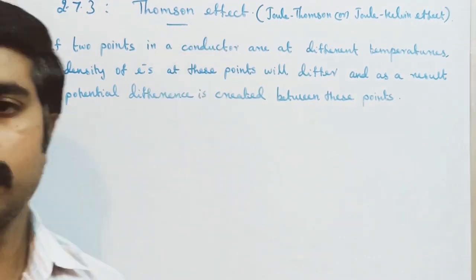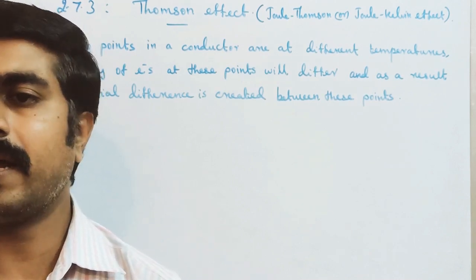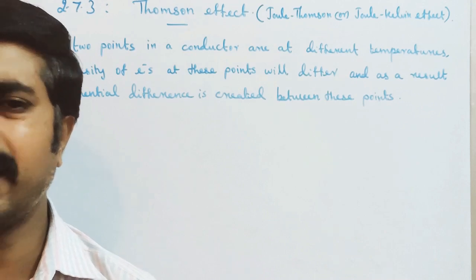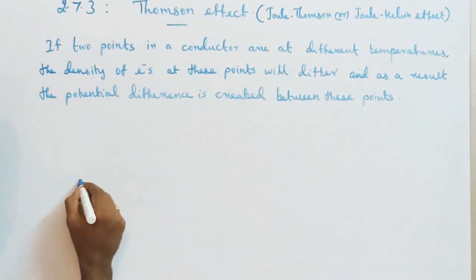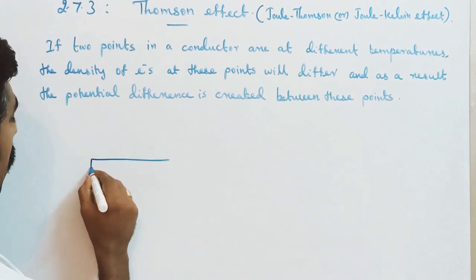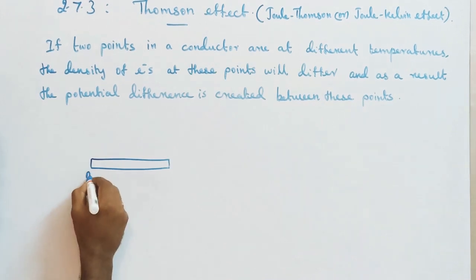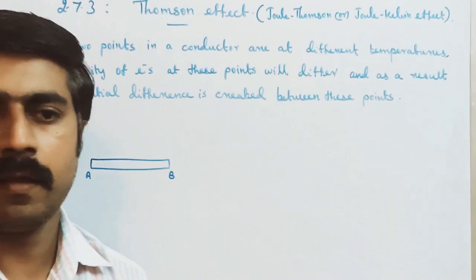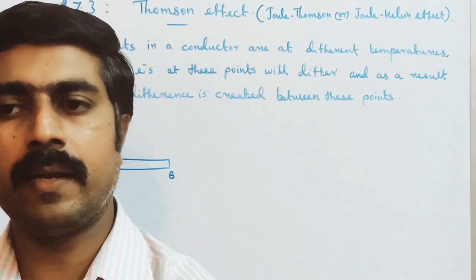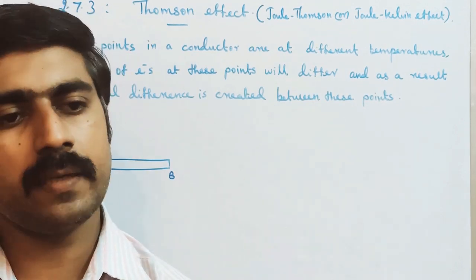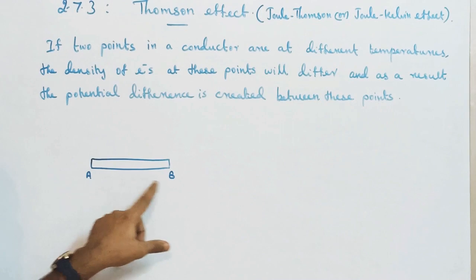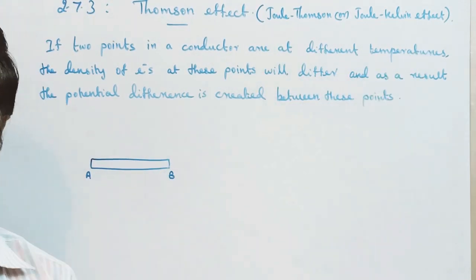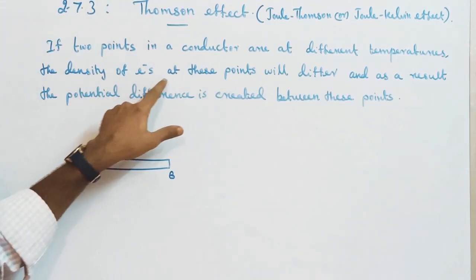So our statement: let us take an unequally heated metal bar — one metal bar, example copper — with one end named A and the other end named B. The temperature at A is low and at B is high, so A is cold and B is hot. Two different temperatures are maintained. If two points in a conductor are at different temperatures, the density of electrons at these points will differ.